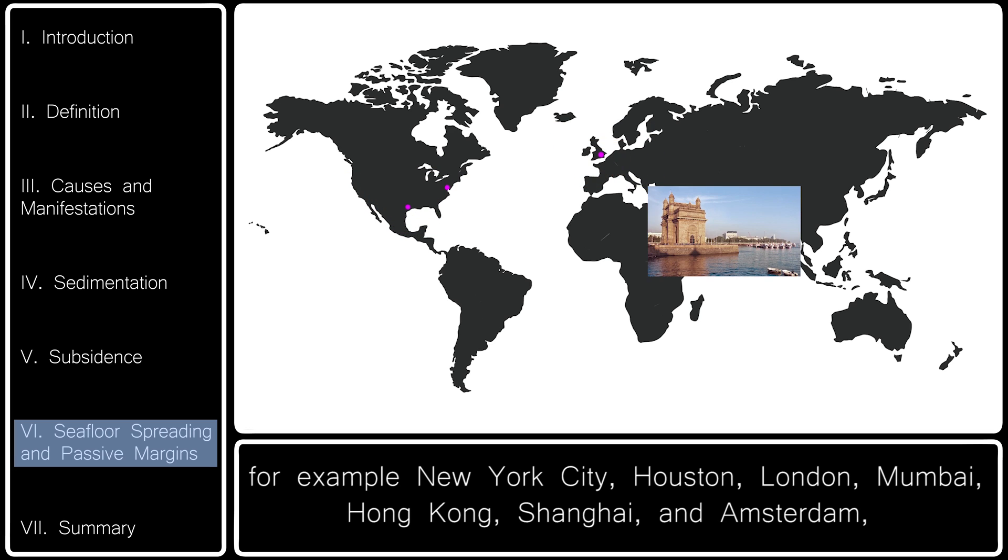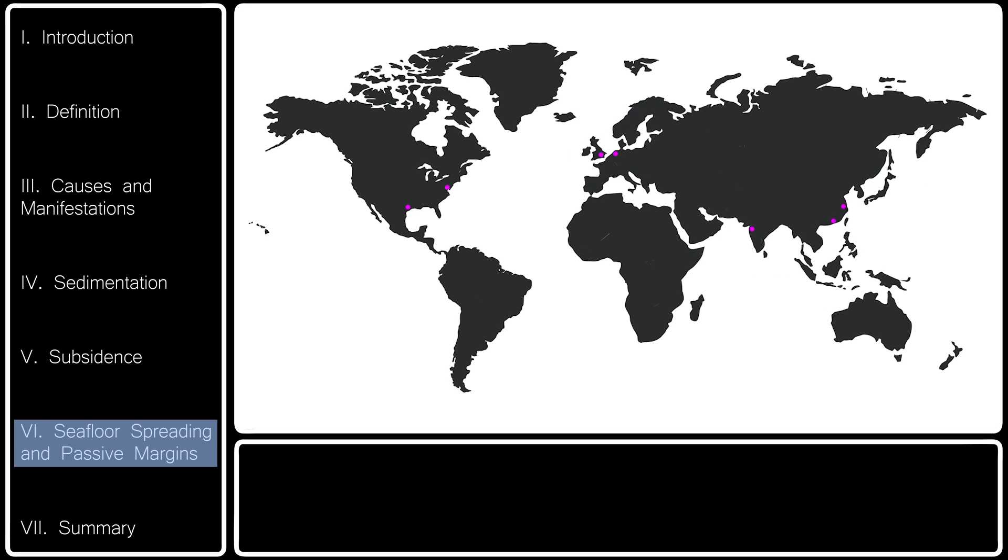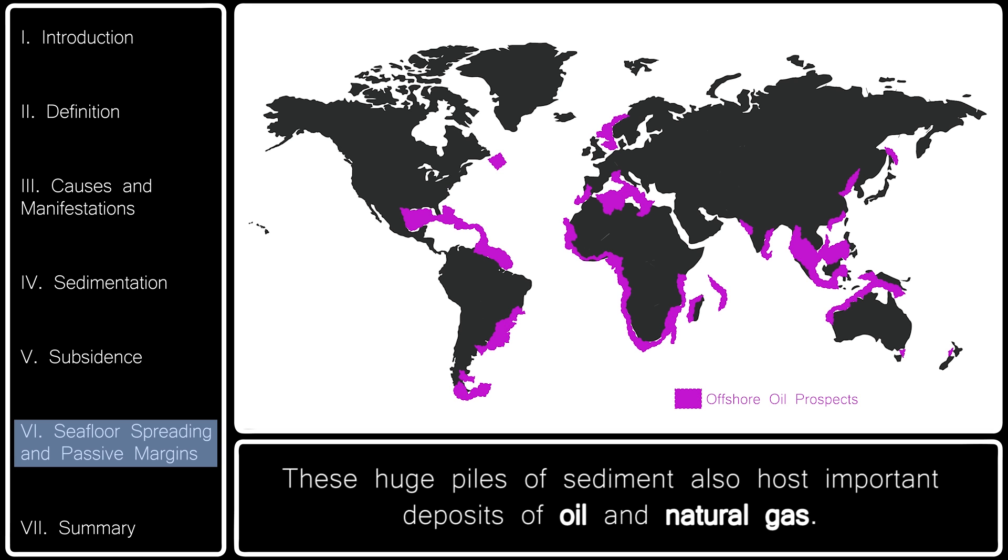Shanghai, and Amsterdam. Much of the world's population lives on passive continental margins. These huge piles of sediment also host important deposits of oil and natural gas.